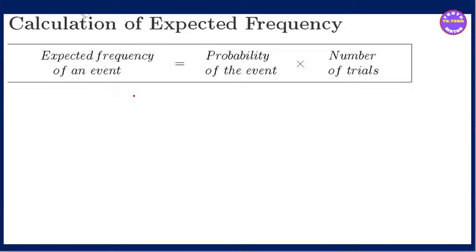Now, let's see what we have in Grade 10. We have section 7.12. We have probability — a lot of probability that we have to look at. We have a formula for exercise 7.34. We have a lot of probability to cover, including the calculation of expected frequency.